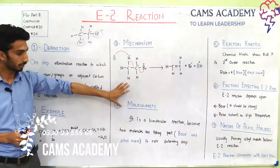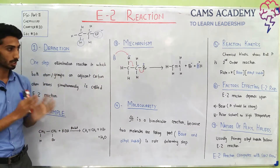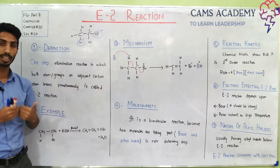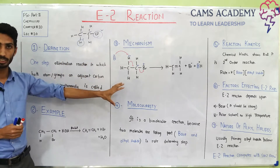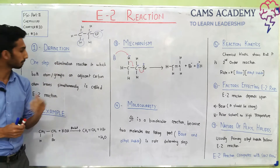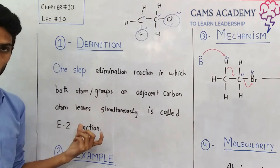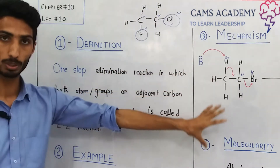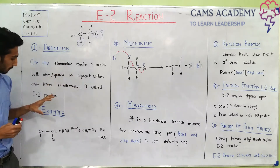We will cover these headings: first the definition, then an example, then the mechanism, molecularity, reaction kinetics, which factors affect it, and the nature of alkyl halide. Now let's go to the definition. E2 is a one-step reaction in which both atoms or groups on adjacent carbon atoms leave simultaneously. This is called an E2 reaction.